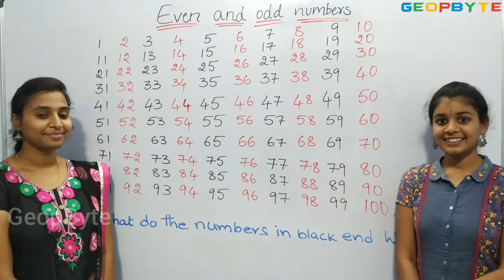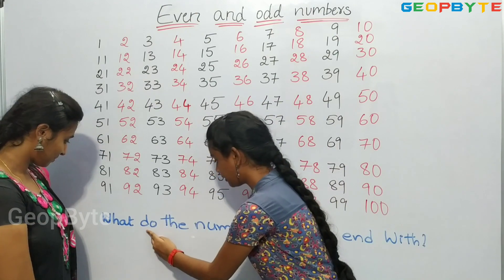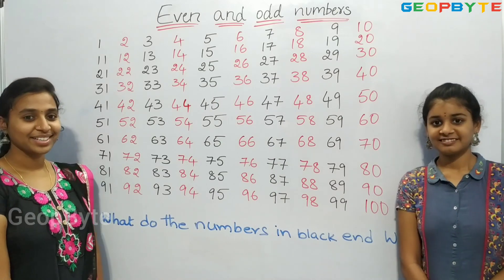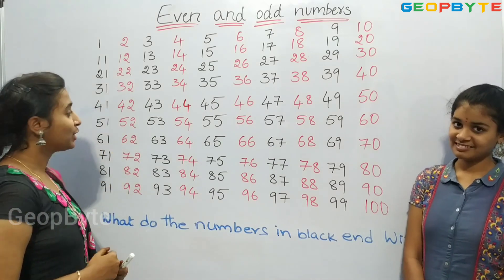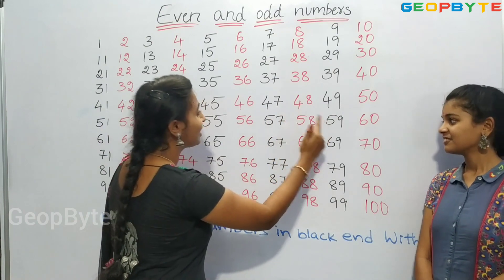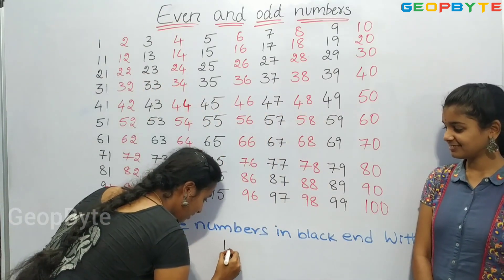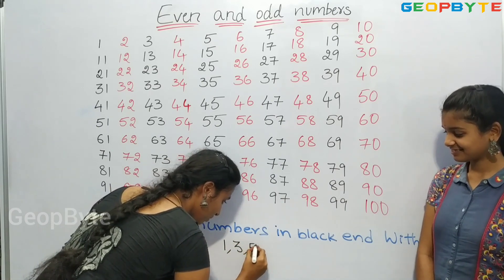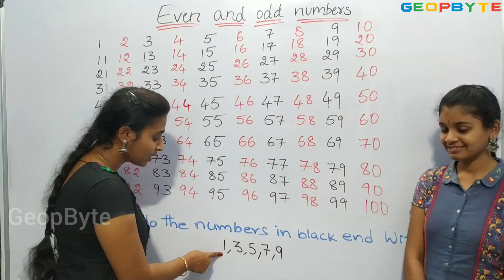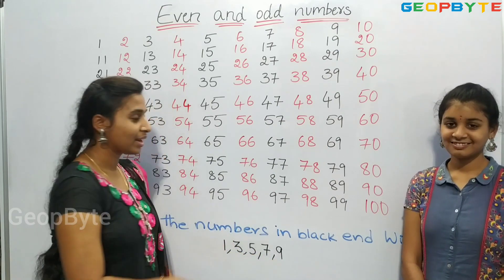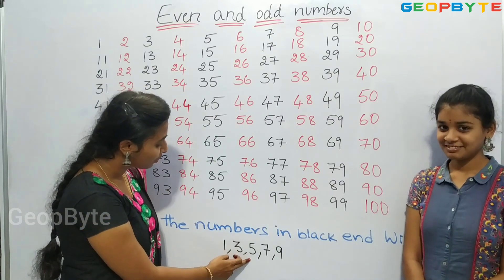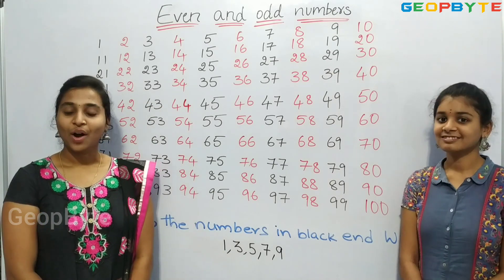Now let us see this question: what do the numbers in black end with? Let us see — the numbers in black end with 1, 3, 5, 7, 9. Children, the numbers which end with 1, 3, 5, 7, 9 are called odd numbers.